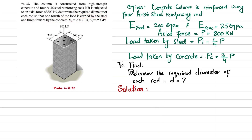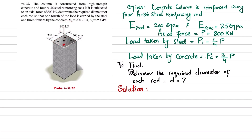E of steel is 200 GPa and E of concrete is 25 GPa. You can see the cross-section of this concrete column having four steel reinforcing rods, acted upon by a compressive load of 800 kN. The rods are made of A36 steel.